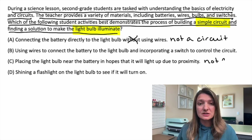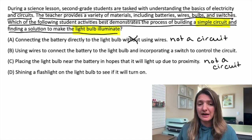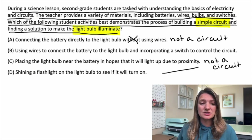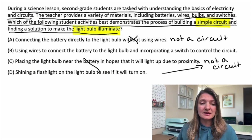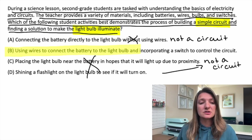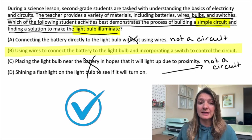Option C: placing a light bulb near the battery in hopes that the light bulb will light up due to proximity — not a circuit. Option D: shining a flashlight on the light bulb to see if it will turn on — again, not a circuit. So our answer is B, that circuit.